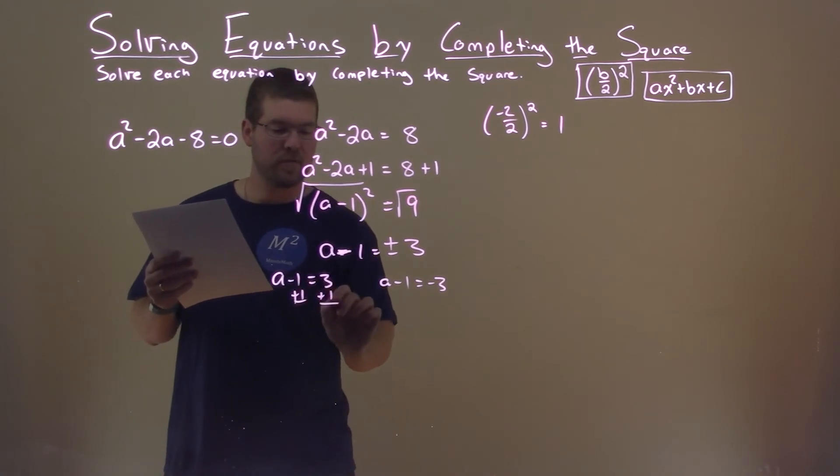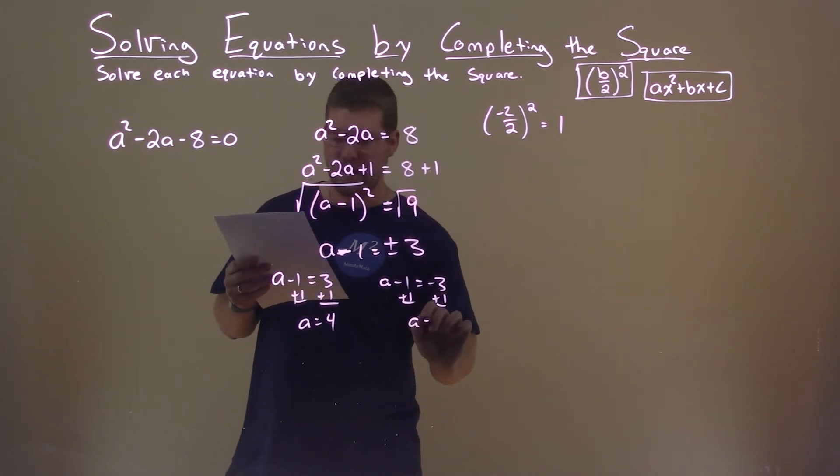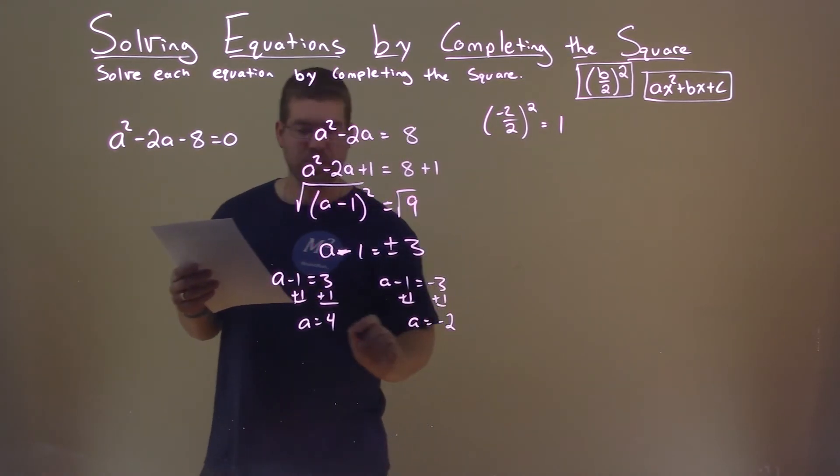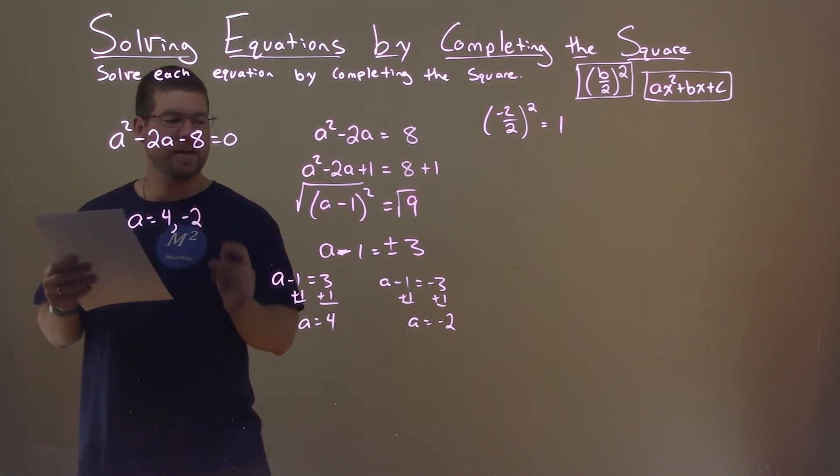Add 1 to both sides, a equals 4. Add 1 to both sides, a equals negative 2. And so my two solutions are a equals 4 and negative 2.